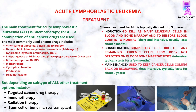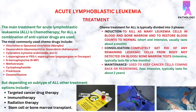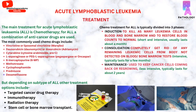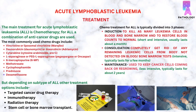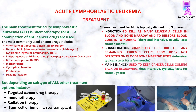The maintenance phase goal is to keep the cancer cells from coming back or regrowing. It is a less intensive phase and typically lasts for about two years. Other treatment options depending on the subtype of ALL include targeted cancer drug therapy, immunotherapy, radiation therapy, and stem cell or bone marrow transplant.